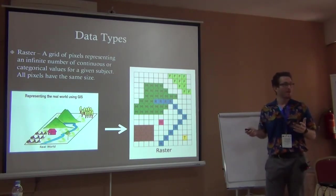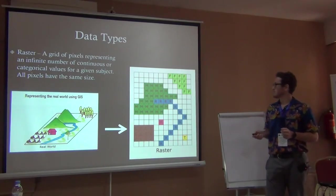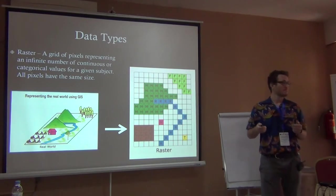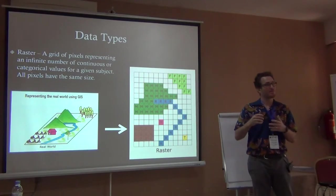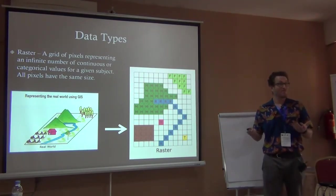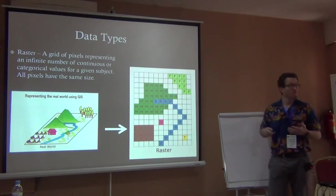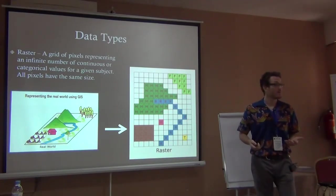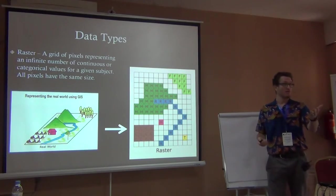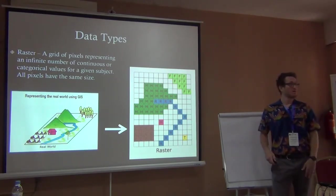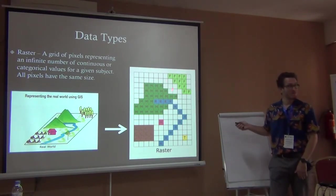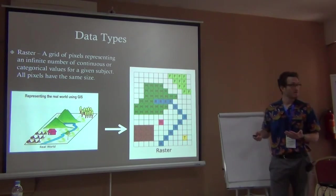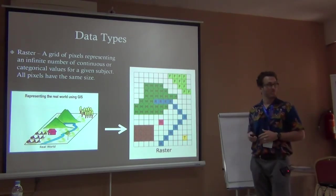We can calculate the area of forest by counting the cells — here there are 11 forest cells. You need to know the area of each cell to express this in square kilometers, but even relatively you can ask: is there more forest or more mountain in this landscape? There are many more mountain cells than forest cells. This is a raster — this is the representation we get.